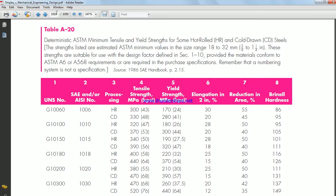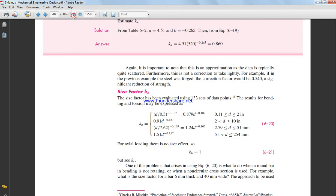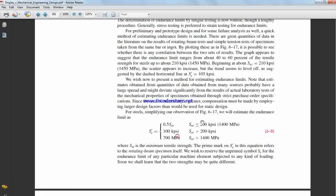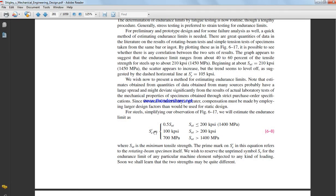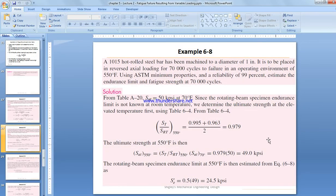If we go back to the endurance limit, if the SUT is less than 200 ksi, then SE prime endurance limit is equal to 0.5 SUT. So this will be 0.5 times 49. The value obtained here is equal to 24.5 ksi.